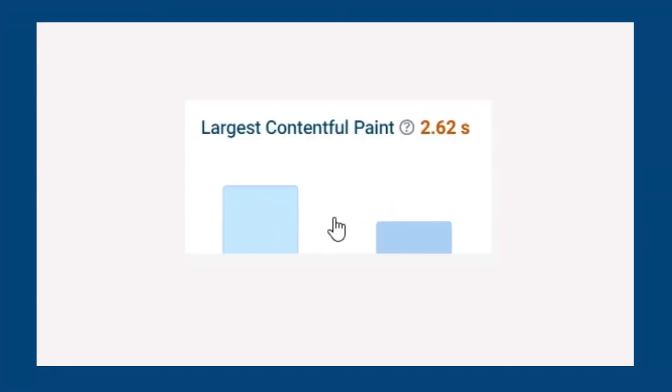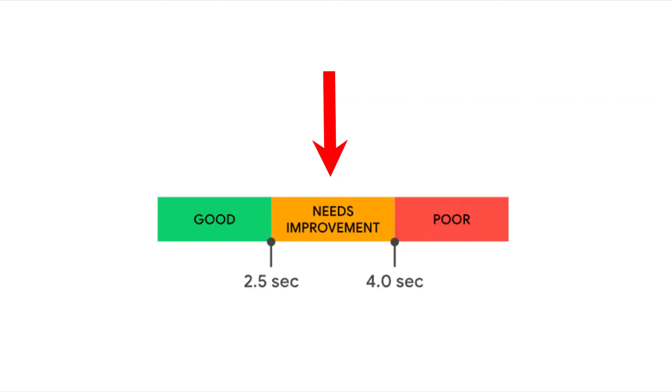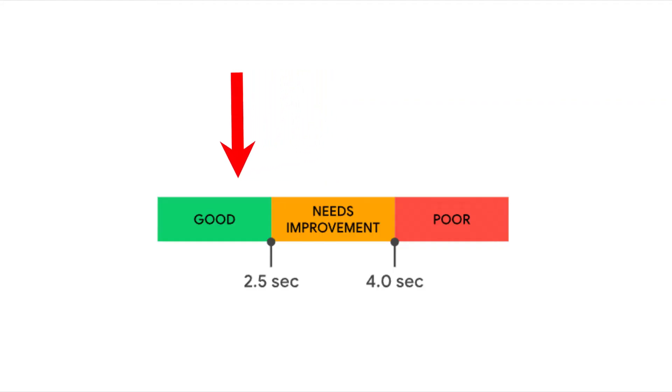After adding the preload with fetch priority high, there's an improvement of 1.36 seconds, taking the LCP score out of needs improvement to good. Request duration is improved by over 50 percent just from this one change. Not only is the metric improved, which is great for the core web vitals, but the user experience is also much faster.